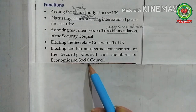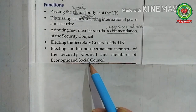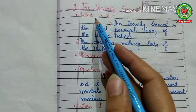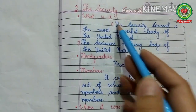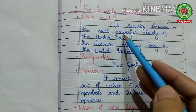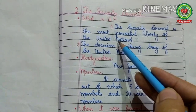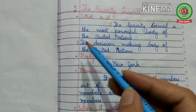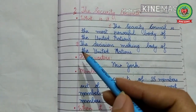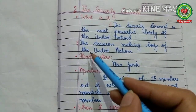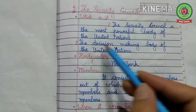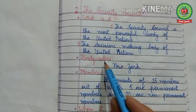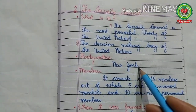Now let us discuss the second main organ of the United Nations — the Security Council. What is the Security Council? The Security Council is the most powerful body of the United Nations and is also known as the executive body of the United Nations, as all the important decisions of the United Nations are taken by it. That is why it is also known as the decision-making body of the United Nations.